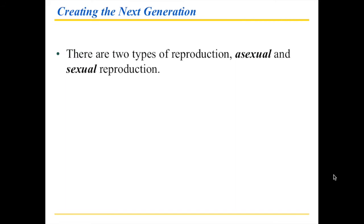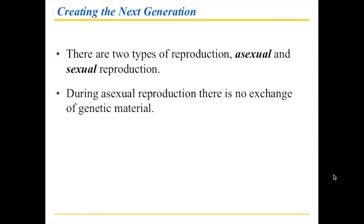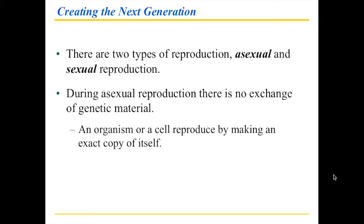When it comes to creating the next generation, there are also very important functions of cell division. There are two types of reproduction: asexual or non-sexual, and sexual reproduction. During asexual reproduction, there's no exchange of genetic material, meaning whatever genetic material the organism has is the same as what the offspring will have. Basically, you make an exact copy of yourself — this is what cloning is all about.